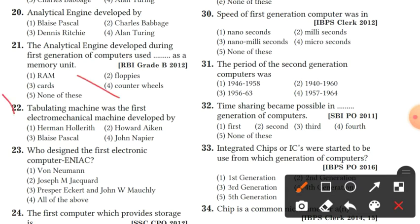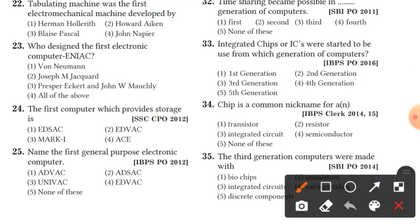Question 22: the tabulating machine was the first electromechanical machine, developed by Herman Hollerith. Question 23: the first electronic computer ENIAC was designed by Eckert and John W. Mauchly. Option 3 is the right answer.